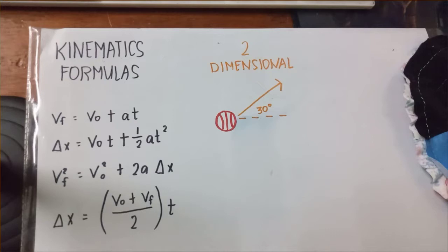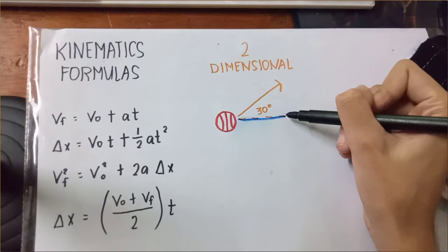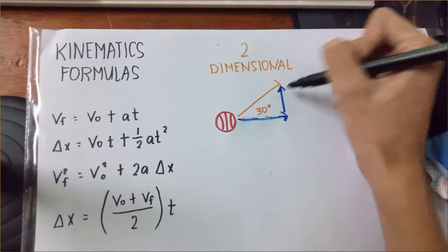In two-dimensional projectile motion, the projectile can move both vertically and horizontally. Like this ball, for example, is moving 30 degrees up from the horizontal to the right. And it's moving vertically up as well.